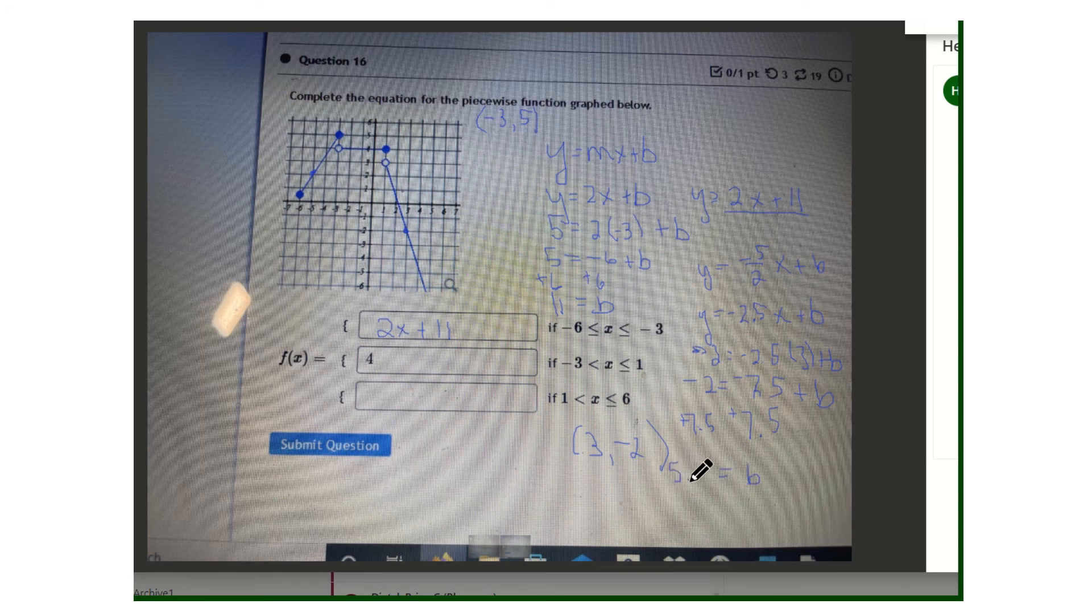Now just like with the last one, we want to put the b back in right up here. And I'm just going to do it right here. We'll have negative 5 halves x, or if we want to call it negative 2.5 x plus 5.5 for b. And hopefully that will help you with those two problems. We'll see you next time. Thank you.